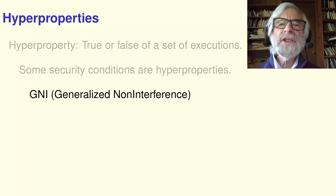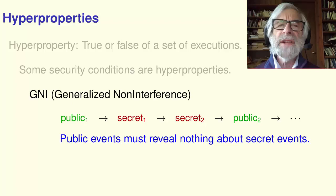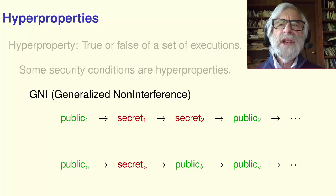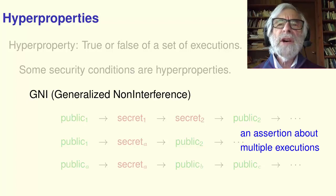Another example is GNI, short for Generalized Non-Interference. It assumes that an execution is a sequence of public and secret events. It's a way of saying that the public events give you no information about the secret events. For any two possible system executions, GNI requires that you can get a possible system execution by combining the public events of the first and the secret events of the second. Again, it's an assertion about more than one execution.